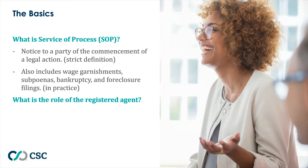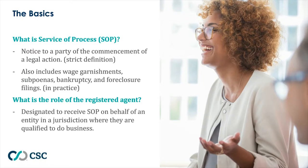We're also thinking of SOP in a broader, more practical sense. Service of process includes garnishments, subpoenas, bankruptcies, foreclosure filings, and a whole range of other legal notices coming through court systems and agencies where customers are either a party to those actions or have a responsibility to provide information or a response. The other key term you'll hear is registered agent — basically a third party designated in jurisdictions where you do business to concentrate all service of process receipts through a single delivery point, and also to receive critical compliance notifications and annual report filings.